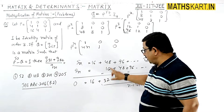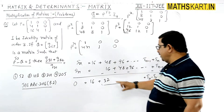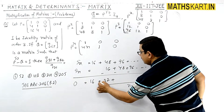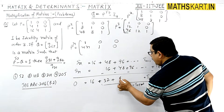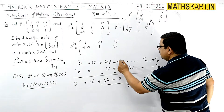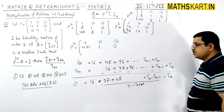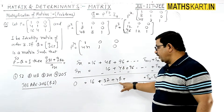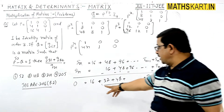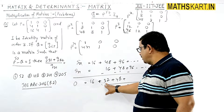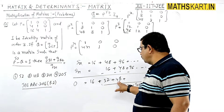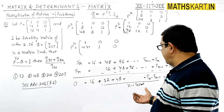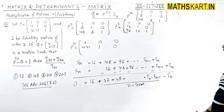Now substituting n equals 50 for P to the power 50: the (2,1) element is 4 times 50 equals 200, and the (3,1) element is 8 times (50 squared plus 50) equals 8 times 50 times 51 equals 400 times 51. The (3,2) element is 4 times 50 equals 200.